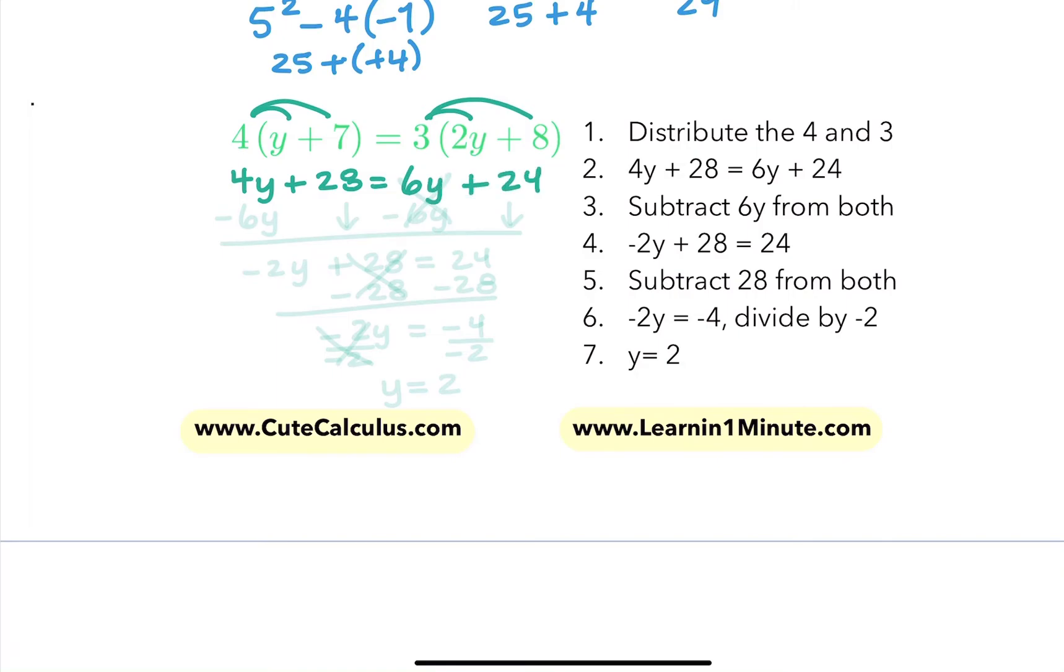Now I'm going to move variables first. You can move whole numbers first however you want, but I want to get the y's all to my left side. So I'm going to have negative 2y plus 28, just bringing that down, equals 24, bringing that one down. Then the 6y eliminated.